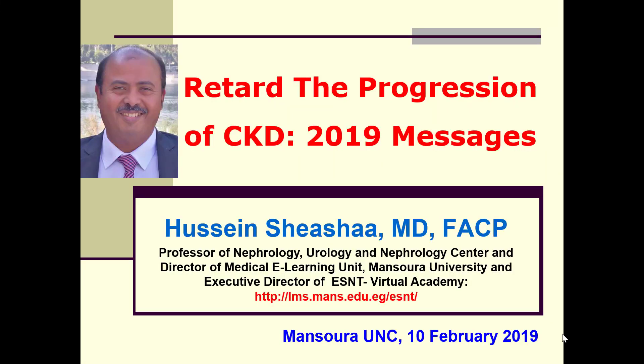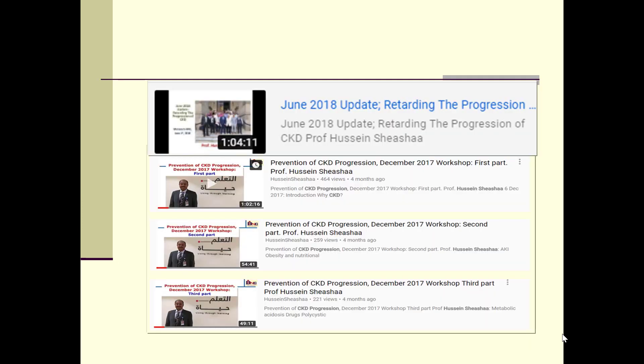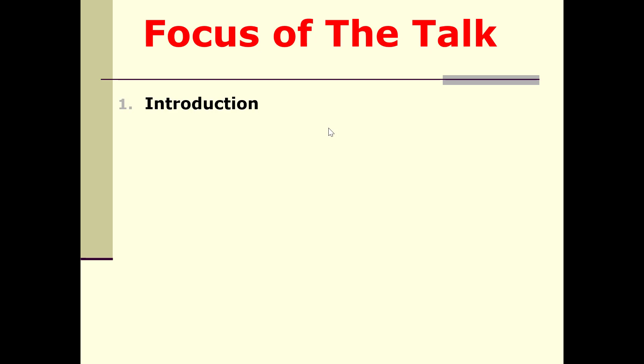Good afternoon. It is my pleasure today to speak about one important — and even the most important — topic: how to retard the progression of chronic kidney disease. I'm going to concentrate on the most updated messages from recent publications. I'll start with an introduction, followed by risk factors, because if we know risk factors for progression and can modify them, we can change the outcome of chronic kidney disease.